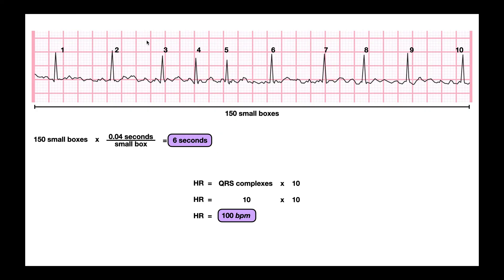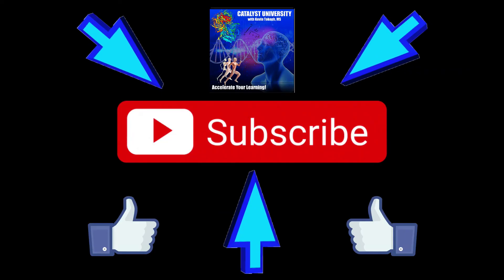This is the method that you have to do when you have an irregular rhythm. You cannot use the 1500 method and you cannot use the 300 method. You have to use the 6-second method. Hopefully this video gave you a good understanding of how to do the 6-second method for calculating heart rate with an irregular rhythm. Please make sure to like this video and subscribe to my channel for future videos and notifications. Thank you.